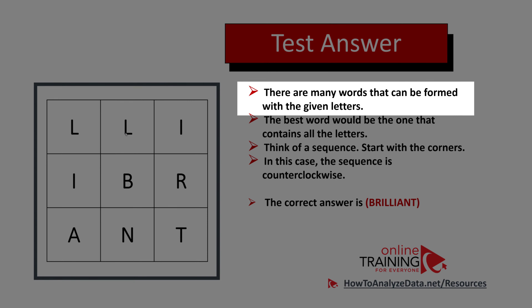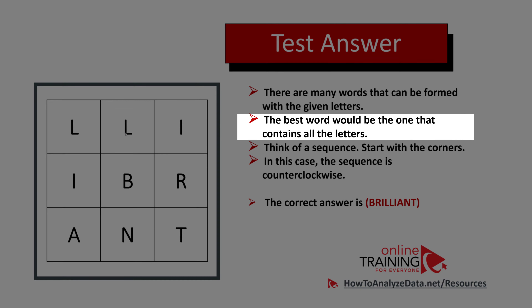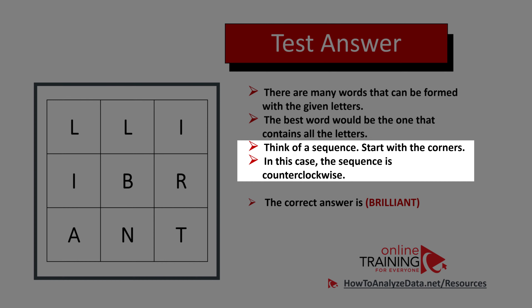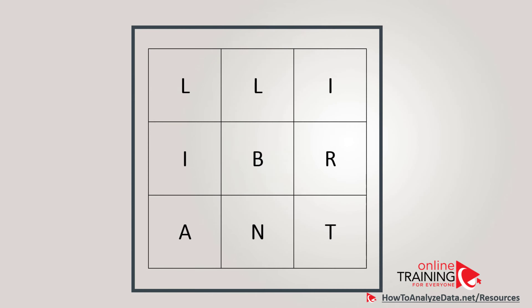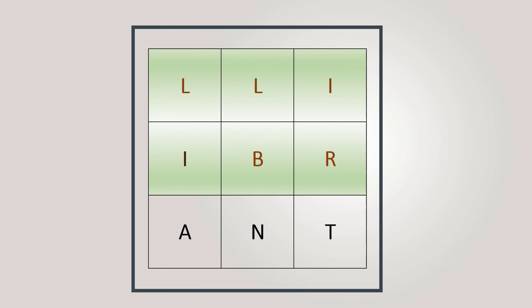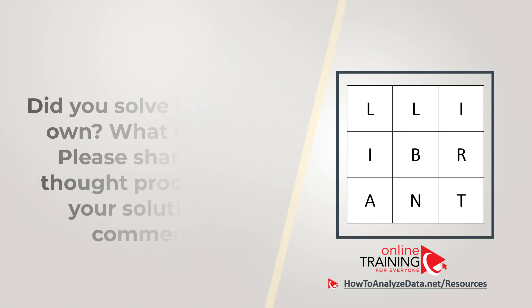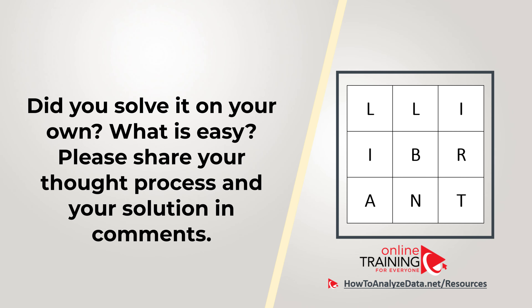There are many words that can be formed with the letters in the nine boxes, but the best word contains all the letters with no duplicates. If we start in the middle and go around counterclockwise, we can form the word BRILLIANT — B-R-I-L-L-I-A-N-T. So the correct answer is 'brilliant.' Hopefully you've nailed this question and got to the correct answer on your own.